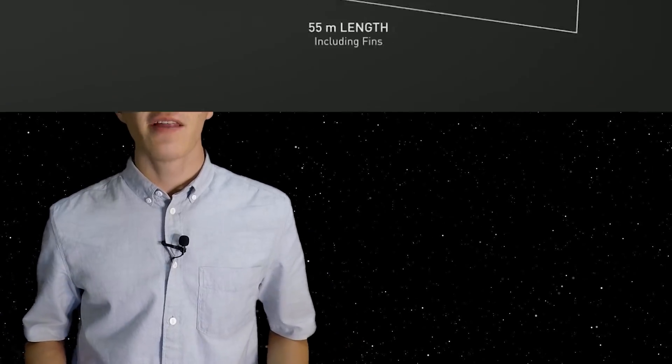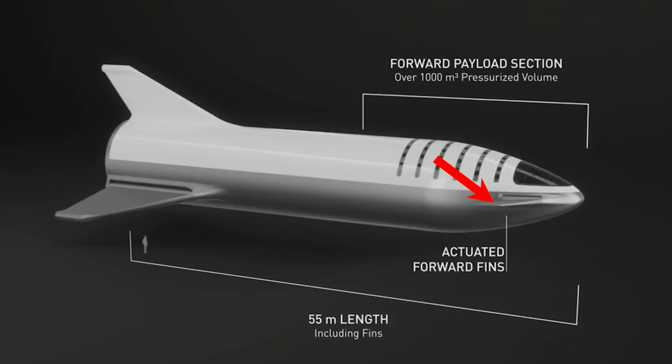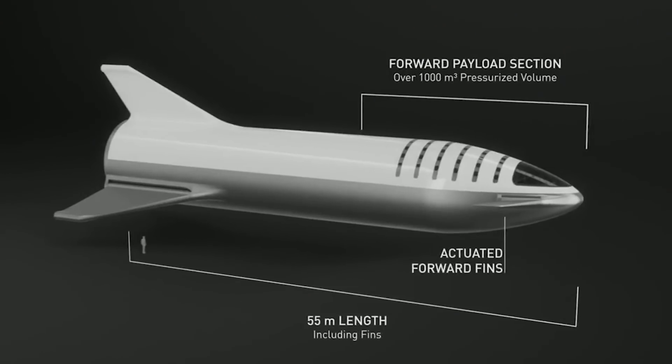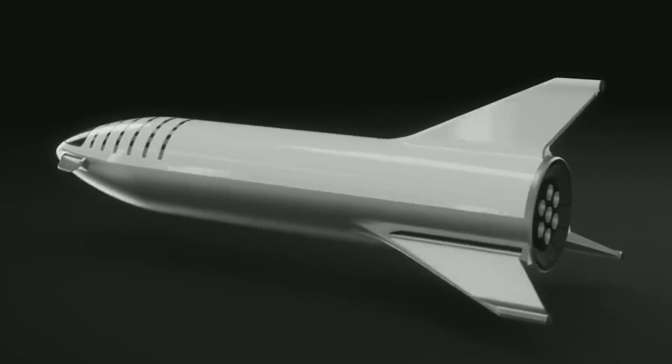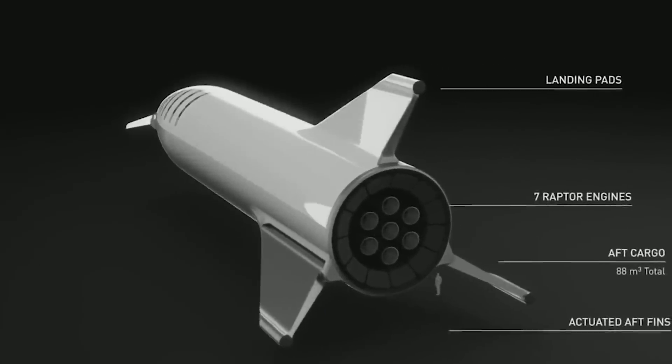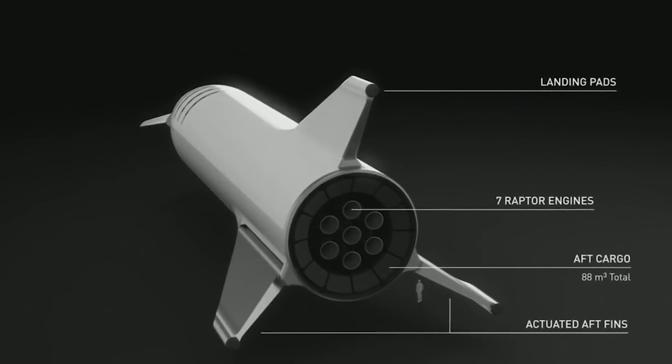In terms of external changes to the BFS, there are added canards or actuated forward fins to help with landing when it re-enters an atmosphere. The BFS spacecraft is about 55 meters long and consists of seven Raptor engines, which can be interchanged between vacuum and sea level engines depending on payload requirements.